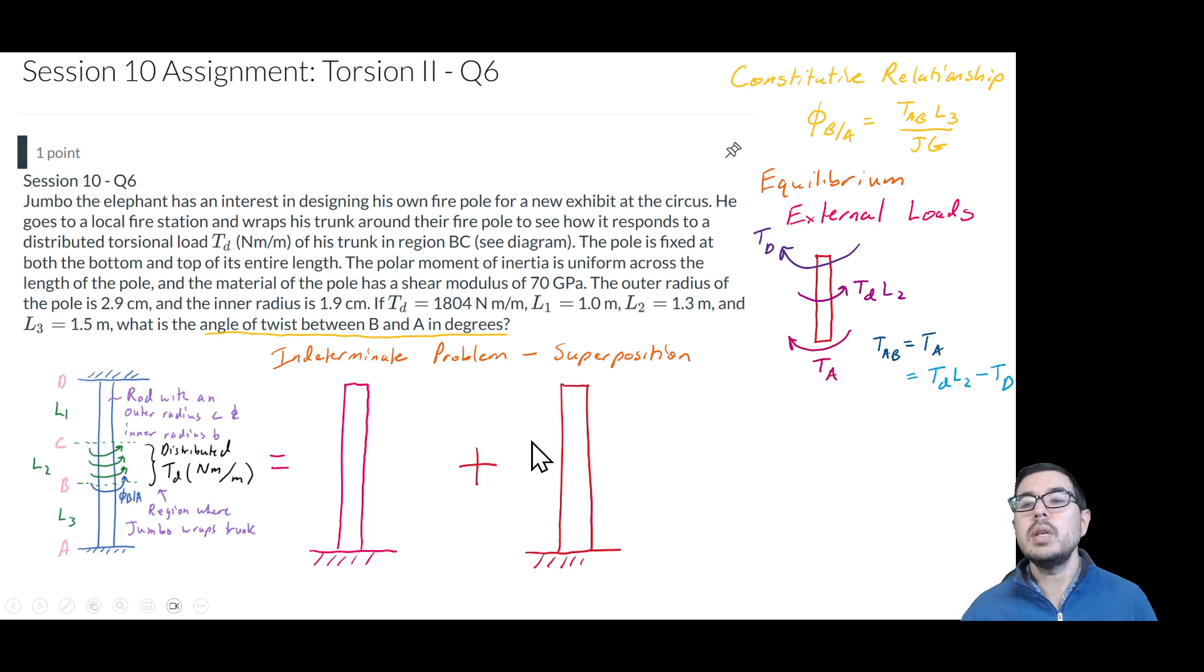So with superposition, we break the problem into two separate subproblems where we have a distributed torque being applied to one problem here, one subproblem, and we have a torque on the top, this TD, being applied to the problem without the distributed torque. So what we have is an opportunity to figure out what the angle of twist just due to this torque might be. And then we have an opportunity to figure out what the angle of twist of the whole rod again is from a reaction torque being applied on the top, such that these angles of twists are going to be cancelling each other out.